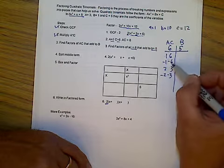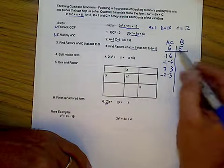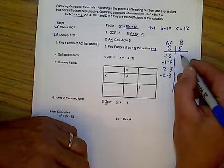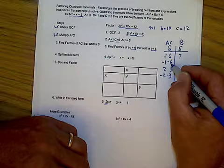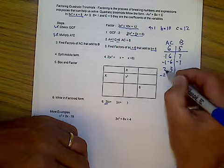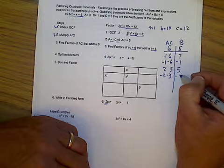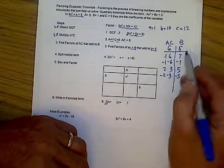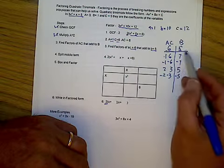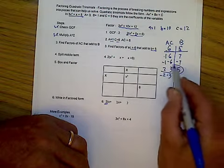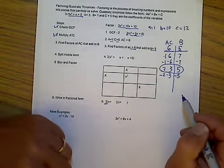Now you'll notice that all of these are positive because this is positive 6. And the signs are very important. So 1 plus 6 is 7, negative 1 and negative 6 is negative 7, 2 plus 3 is 5, negative 2 plus negative 3 is negative 5. So as we can see, we're looking for factors of 6 that add to 5. So that would be this pairing right here.